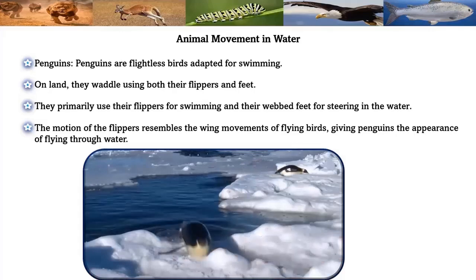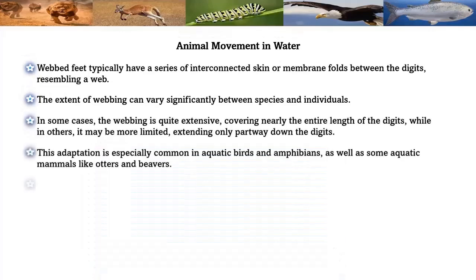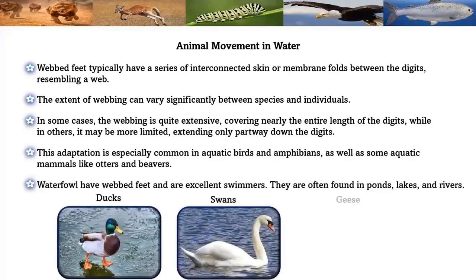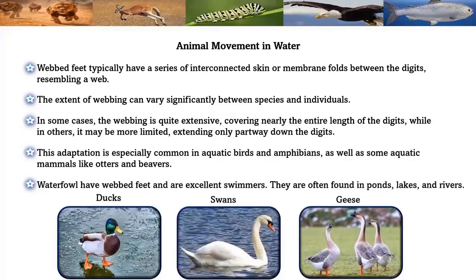Webbed feet typically have a series of interconnected skin or membrane folds between the digits, resembling a web. The extent of webbing can vary significantly between species — in some cases it is quite extensive, covering nearly the entire length of the digits, while in others it may extend only partway. This adaptation is especially common in aquatic birds, amphibians, and some aquatic mammals like otters and beavers.